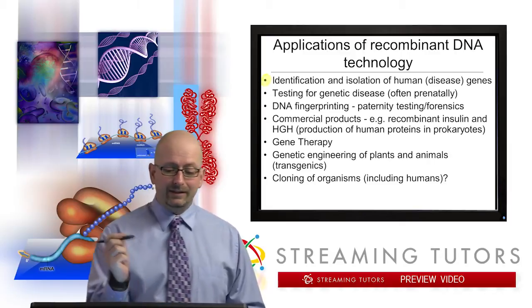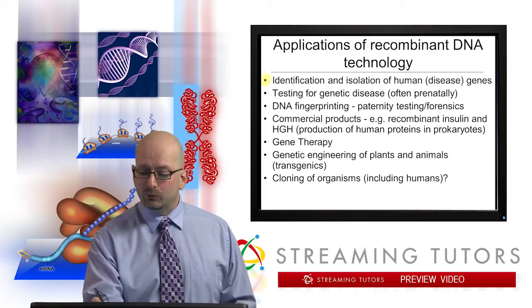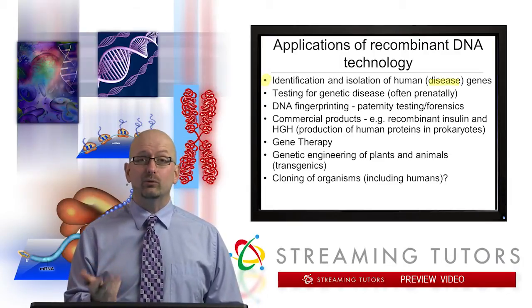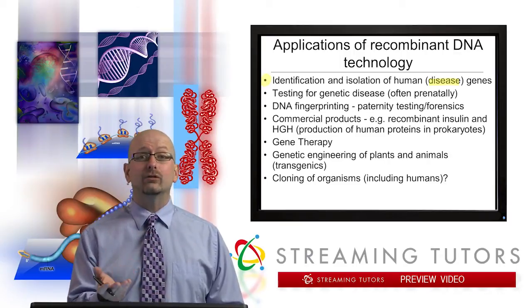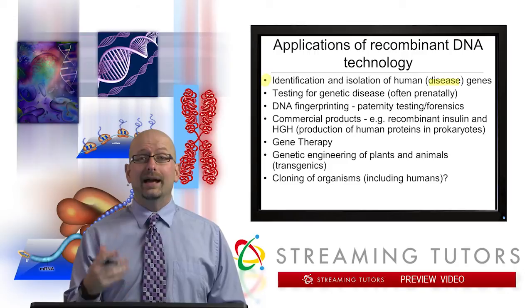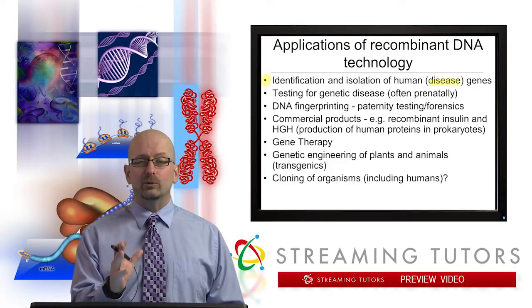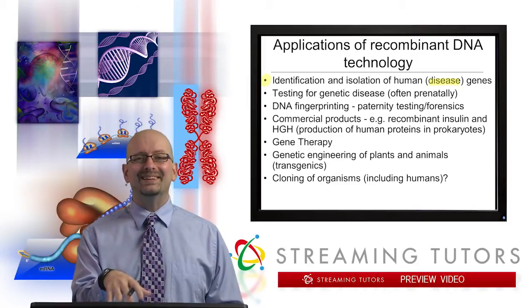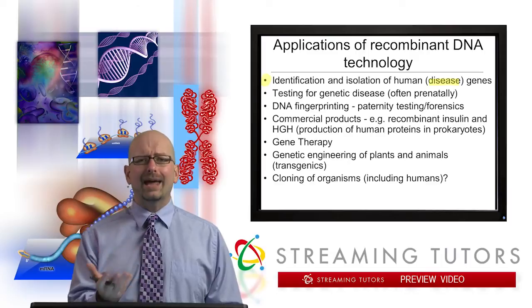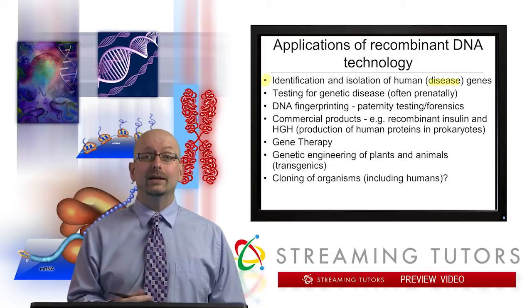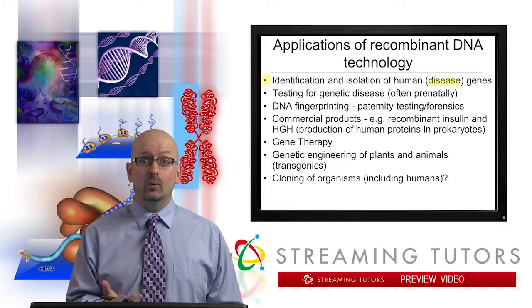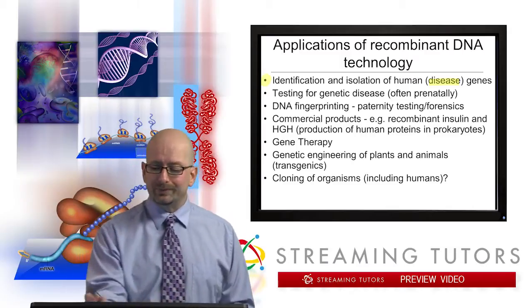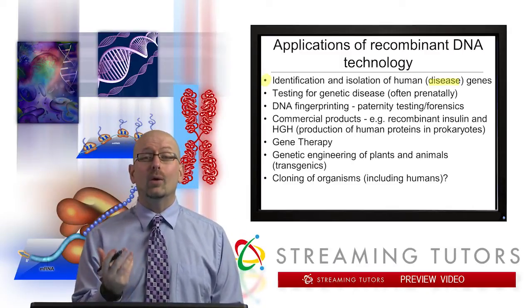Firstly, identifying and isolating human genes. I wrote disease genes here, but think about this — one of the big examples we used was identifying and isolating the human insulin gene. It doesn't have to be a disease gene. It's just that obviously genetic diseases — we certainly want to know what gene is responsible, characterize it, et cetera. So it's not limited to that, but certainly disease genes are widely studied.